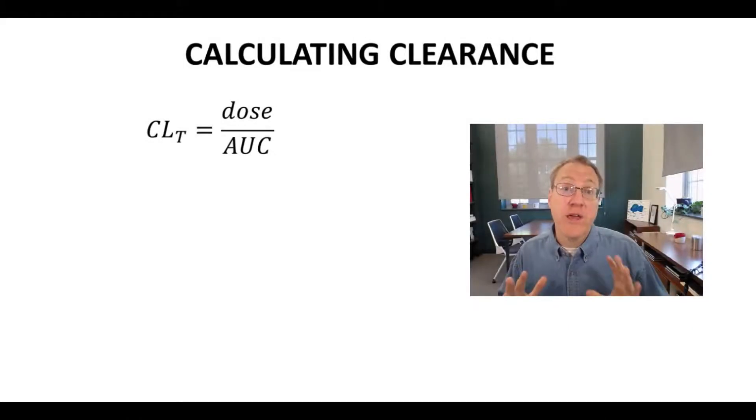How do we calculate clearance? Well, to determine clearance, we need to know the dose of drug that a patient received. Typically we know that. How much drug did the patient get? And then we need to determine the area under curve for that dose. And we now know how to calculate that using the trapezoid approximation. I will note that the method I'm describing only works if it's an IV drug, so administered as an IV bolus.